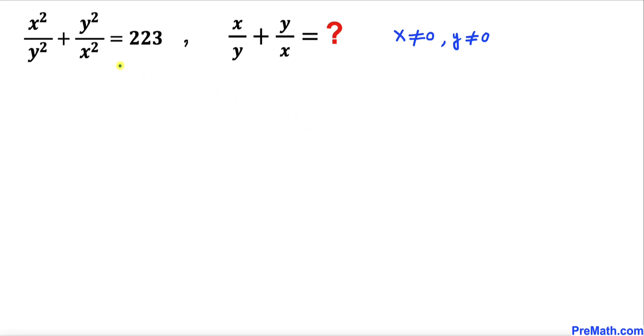Welcome to PreMath. In this video we have got this rational equation: x squared divided by y squared plus y squared divided by x squared equals 223. We are going to find the value of x divided by y plus y divided by x.